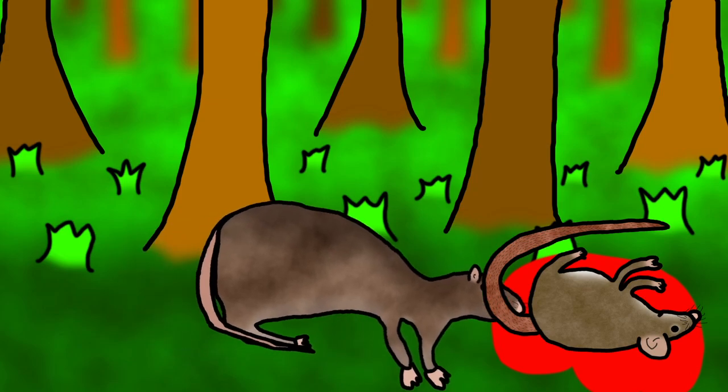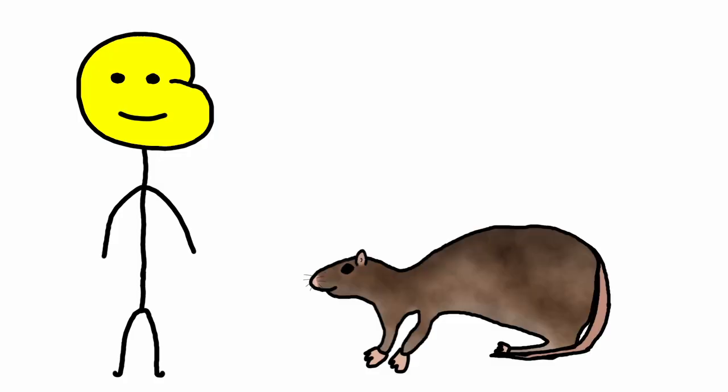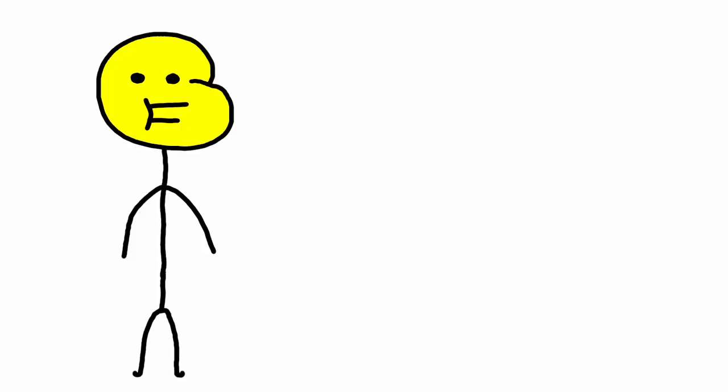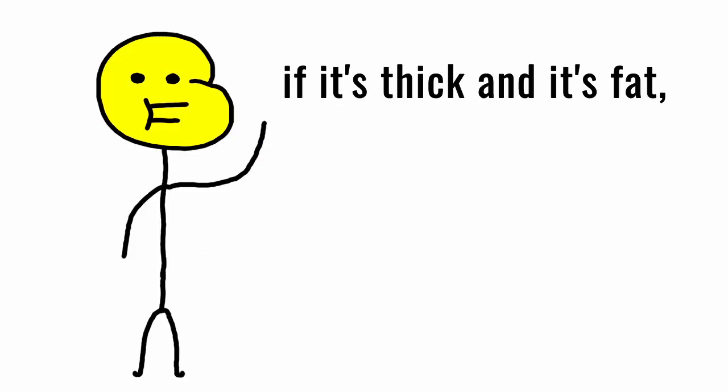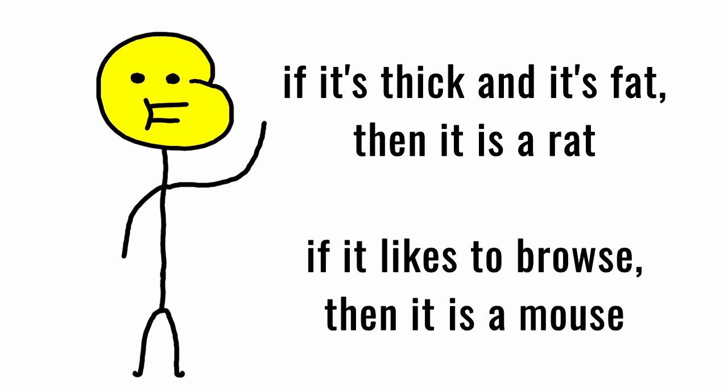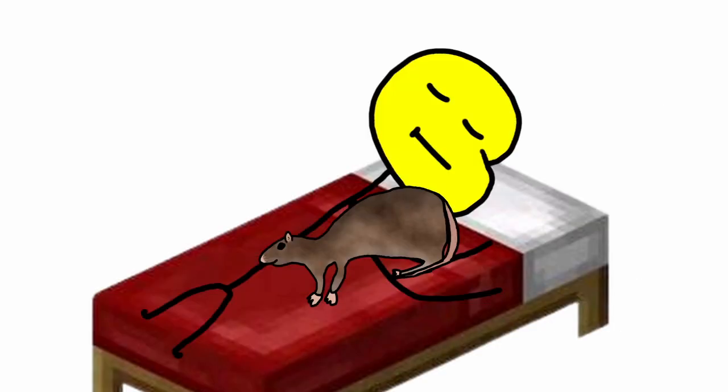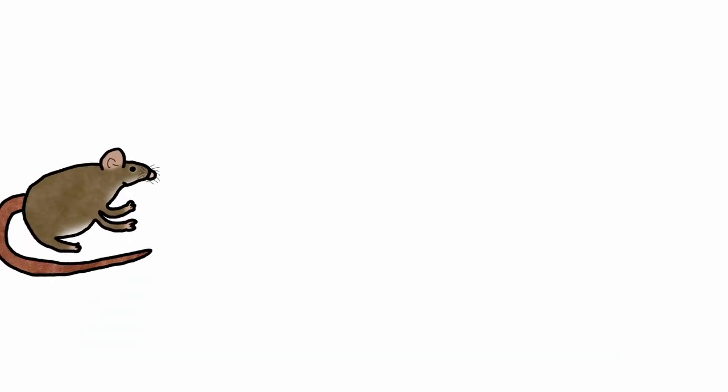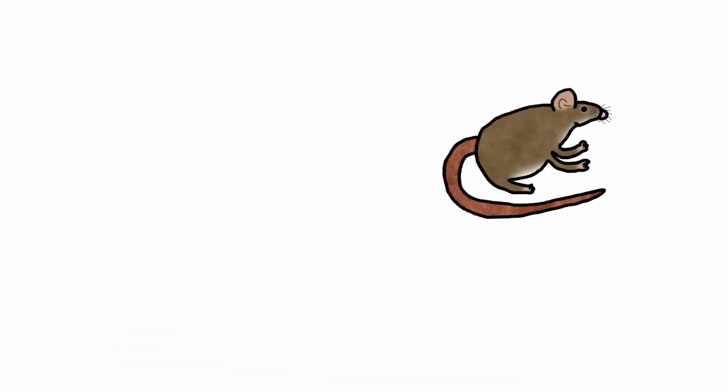As pets, rats tend to be more affectionate and loving and mice tend to be more curious and independent. It's like how the saying goes, if it's thick and it's fat, then it is a rat. If it likes to browse, then it is a mouse. Like rats will cuddle, play and be generally chill. Mice on the other hand will try to get away and do some crime. Mice don't like to play but rather do things on their own.